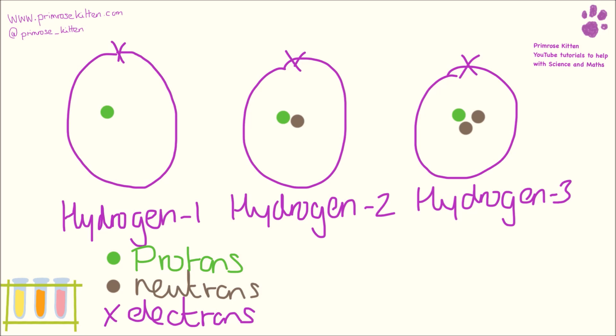When looking at an element, the important thing that determines it is the atomic number — that's the number of protons that something has. The mass just tells us how many neutrons there are in addition to protons, and if something is heavier than normal it's going to have more neutrons than normal.